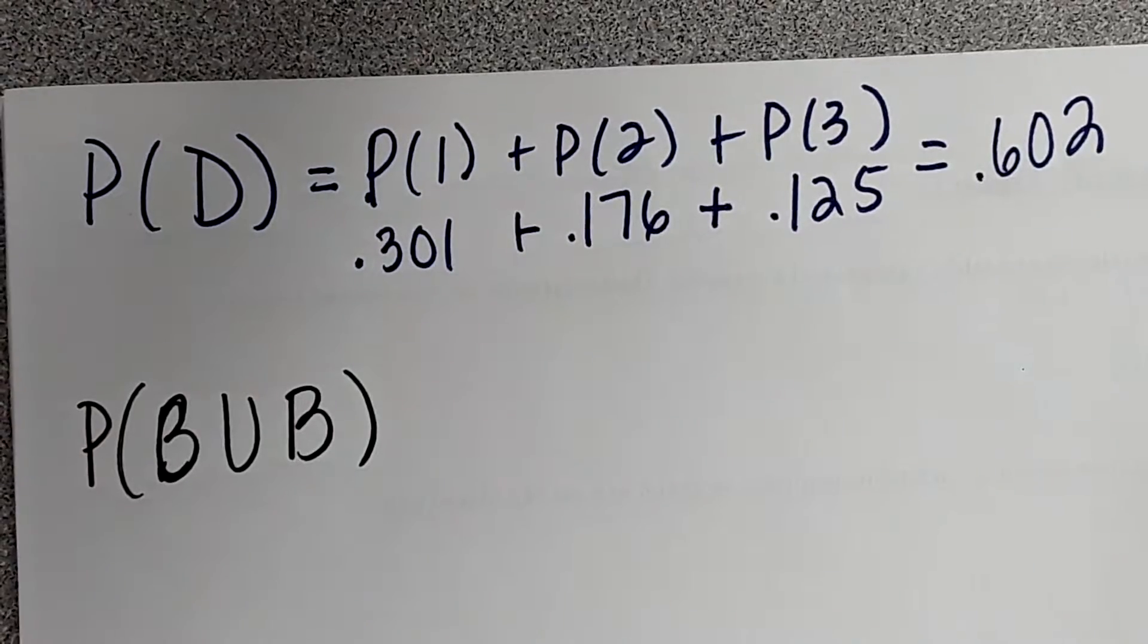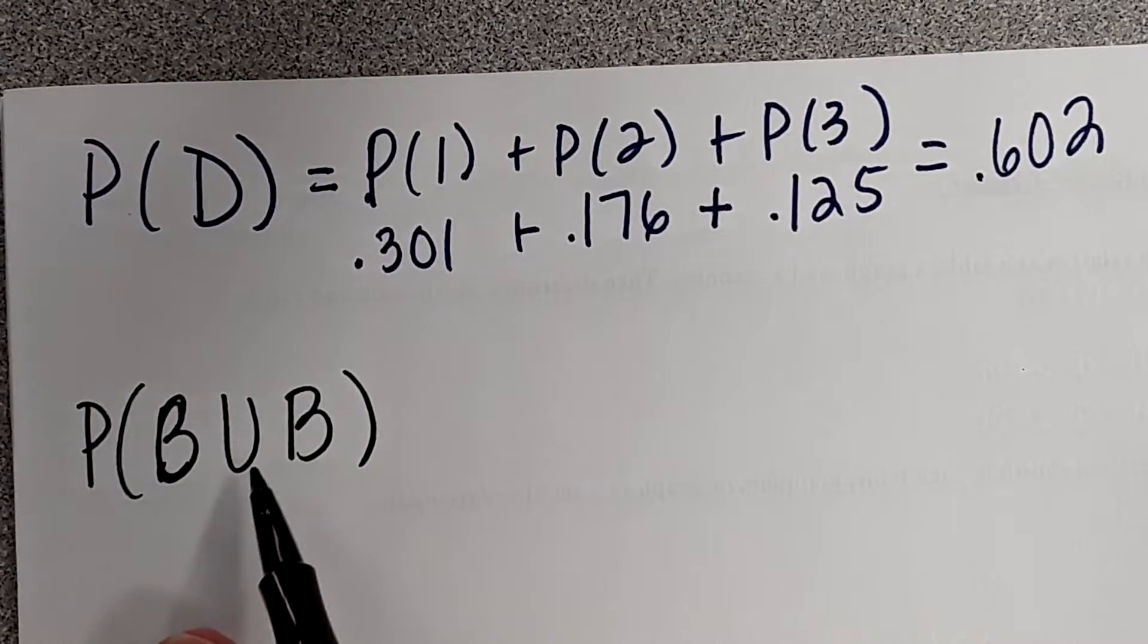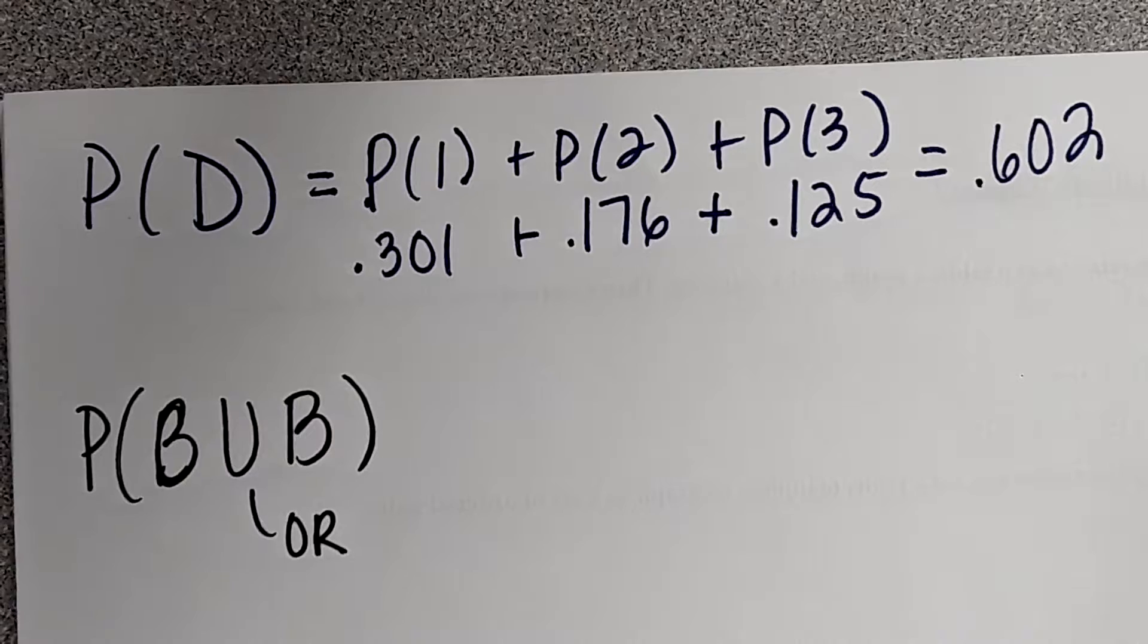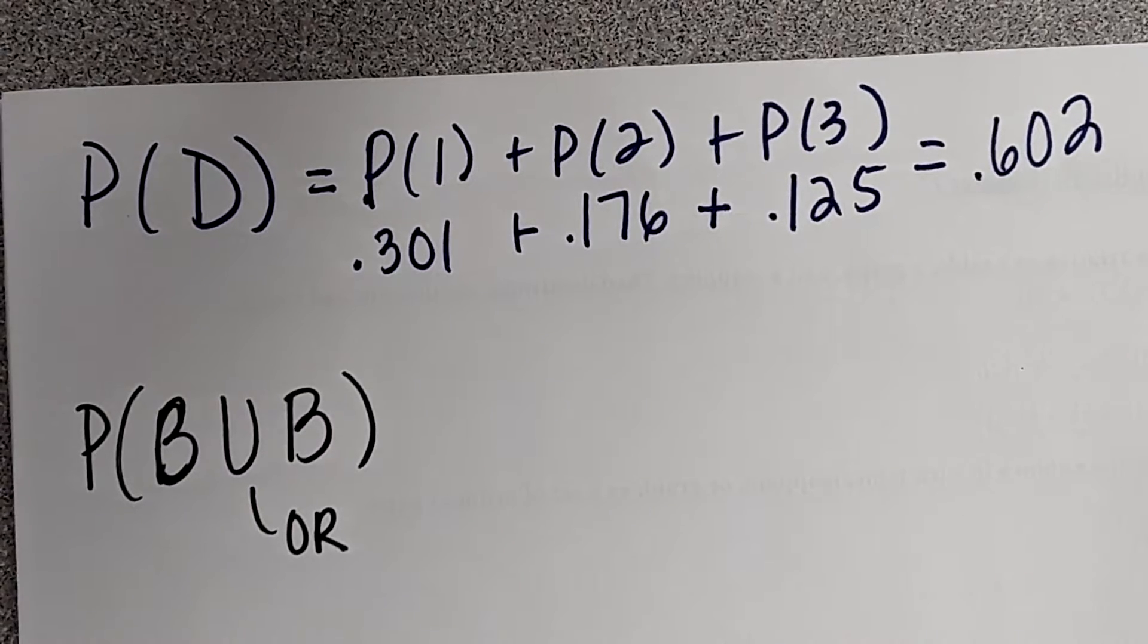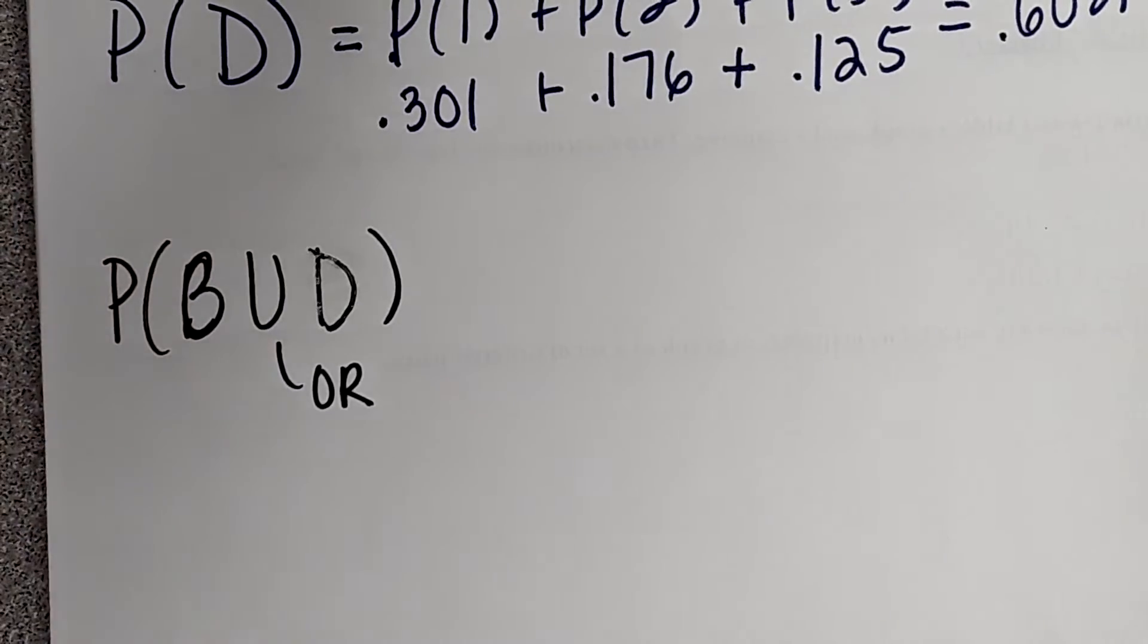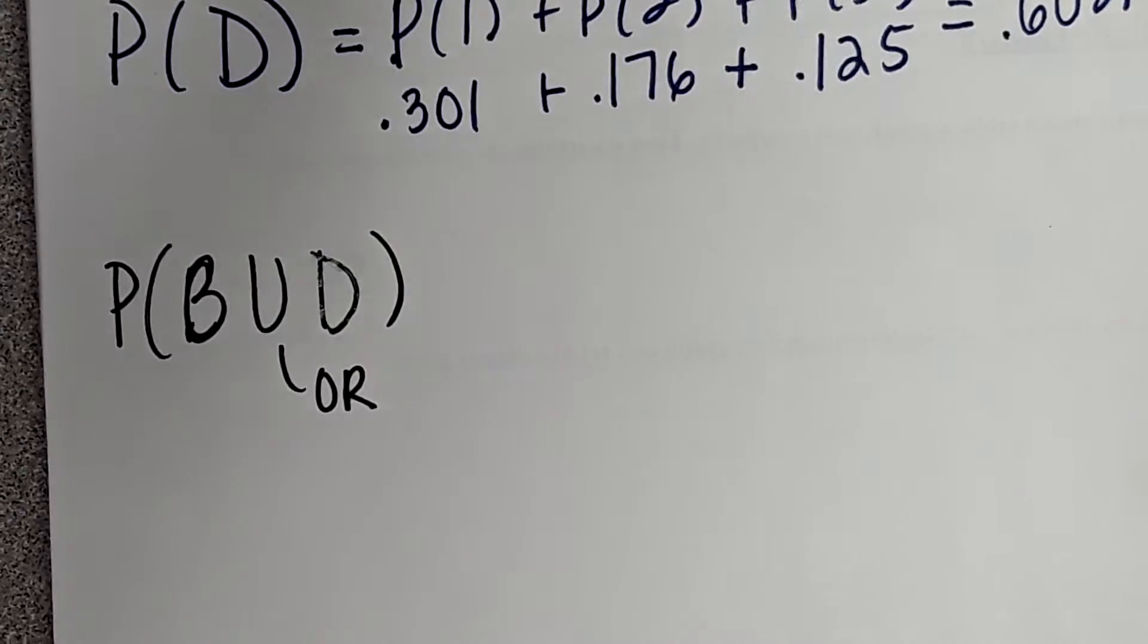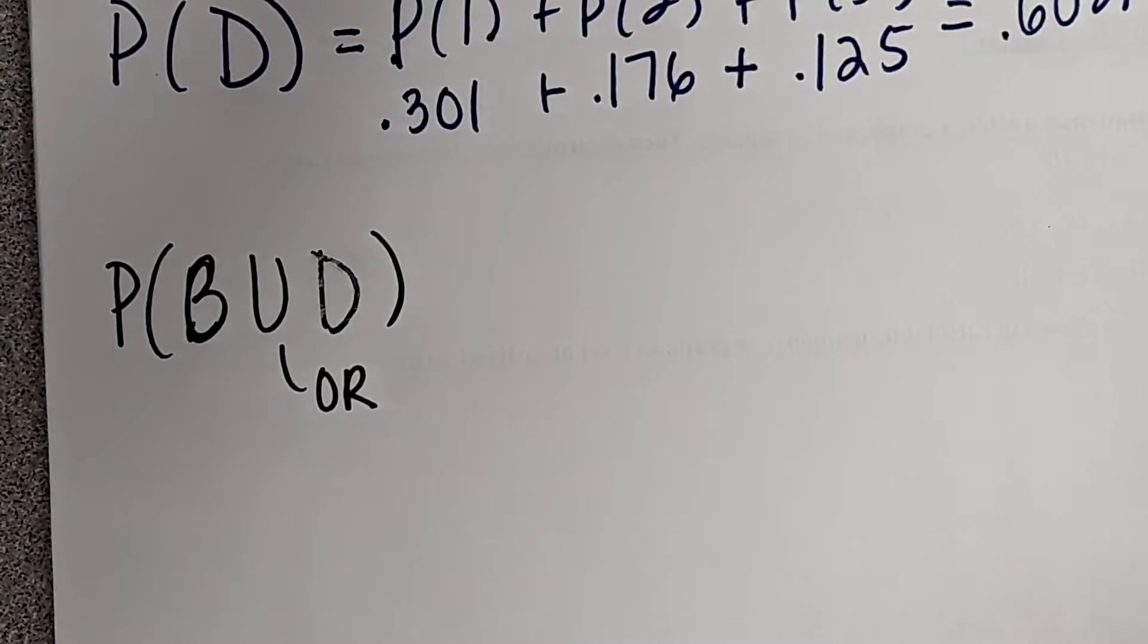The downward U is intersection, yes, is and. The upward U is or, union. That means everyone gets to come. The intersection means not everyone gets to come, and. I just wrote that wrong. That is not B and D, that is B or D. So how do you find events B or D?